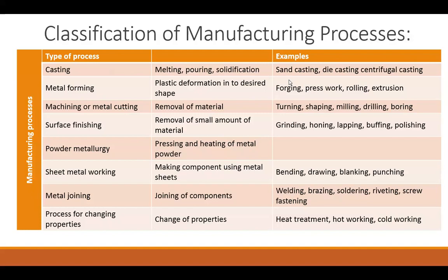The next manufacturing process is the Surface Finishing Process. Surface finishing processes are used for getting the final accurate dimensions, wherein a very small amount of material is removed from the product and it is converted into the final dimensions and final shape of the component. Grinding, honing, lapping, buffing, and polishing are the surface finishing techniques used for finishing operations.